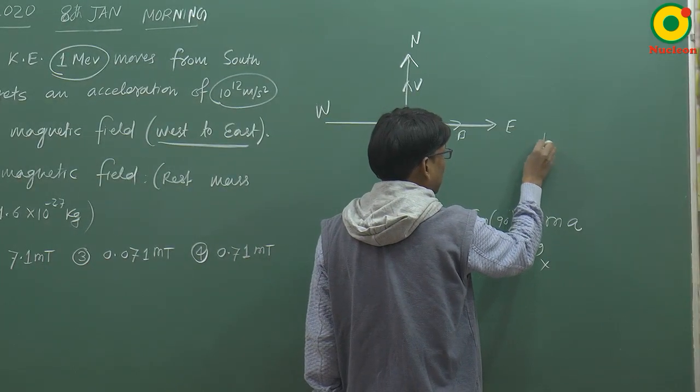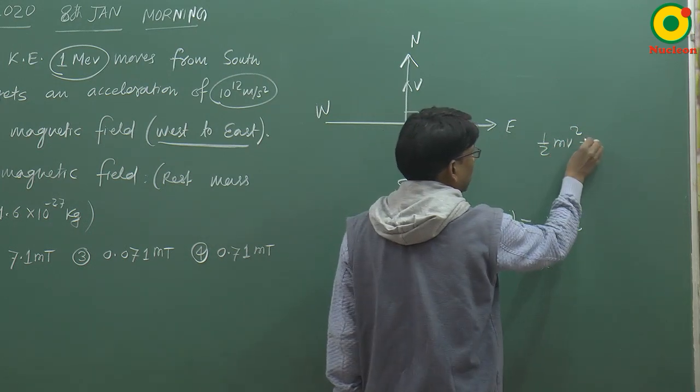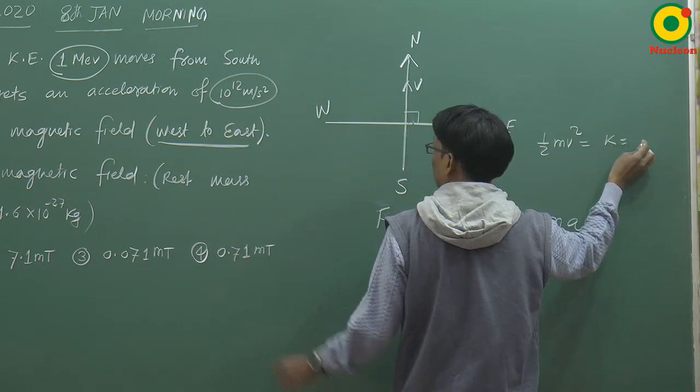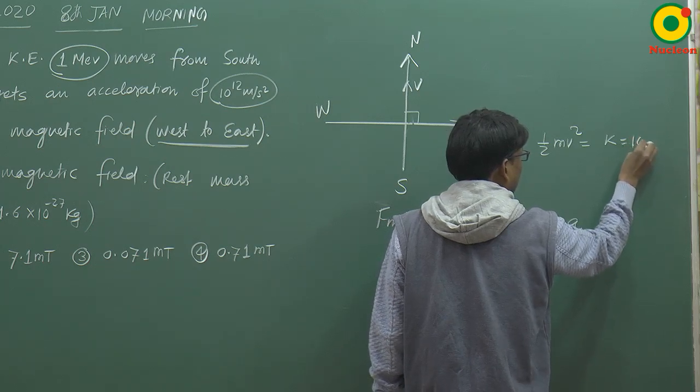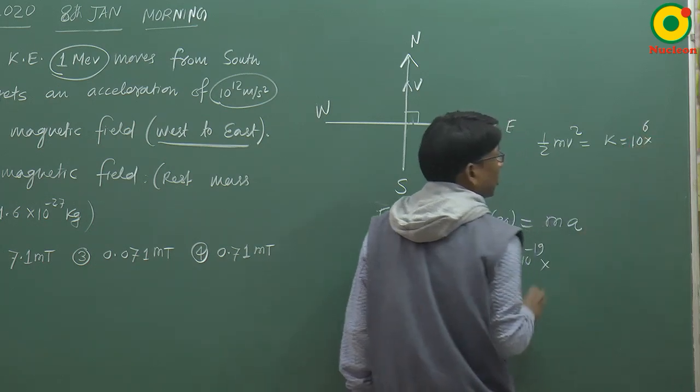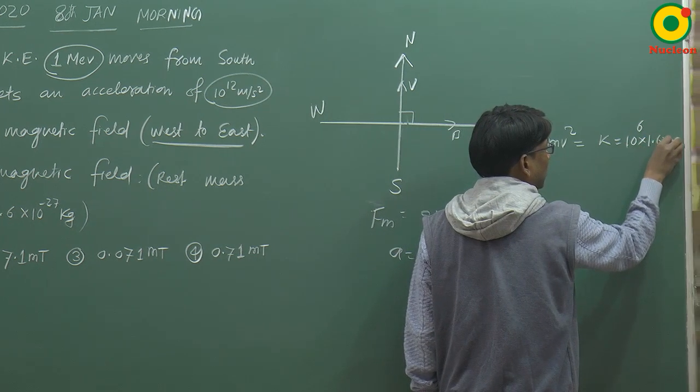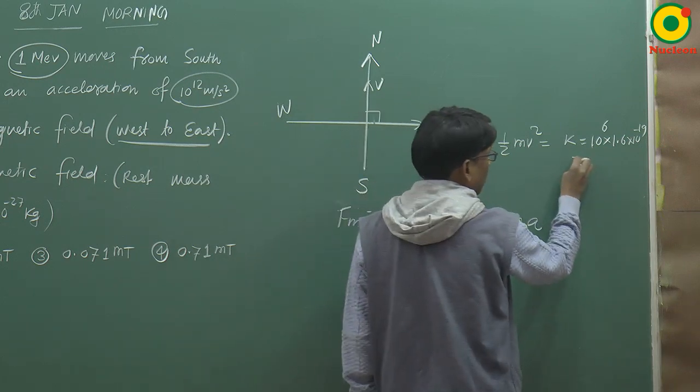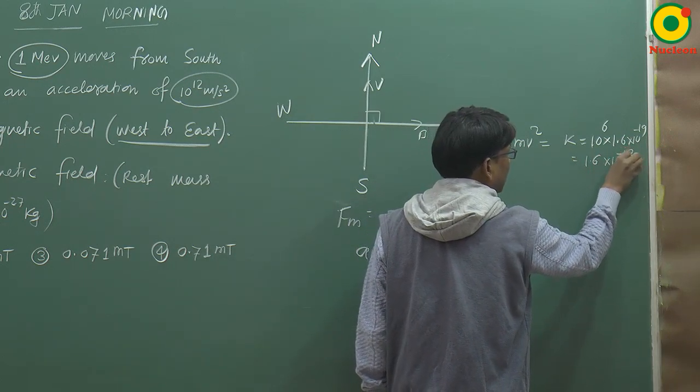Kinetic energy hoota hai yahaan par half mv square. Yahaan par kinetic energy hai. Kinetic energy diya gaya hai 1 mega electron volt. Toh pahela toh hum likhenge 10 to the power 6. Isko joule me convert karna hooga. Toh 1.6 into 10 to the power minus 19 se multiply karenge. Toh yaha aayega 1.6 into 10 to the power minus 13.